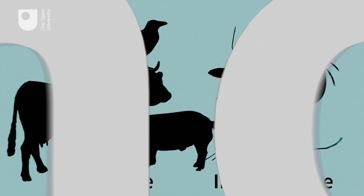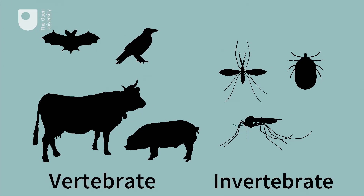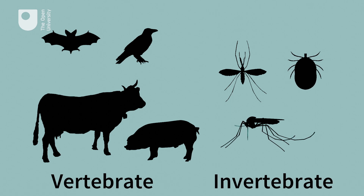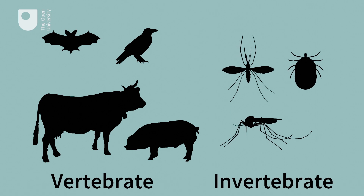Zoonoses refers to diseases that are spread from animals to humans. It's possible for humans to catch diseases from a range of invertebrate and vertebrate animals. The term vertebrate refers to animals that have a backbone, like cows, pigs, bats and birds. The term invertebrate refers to animals that do not have a backbone, like ticks, mosquitoes and sand flies.